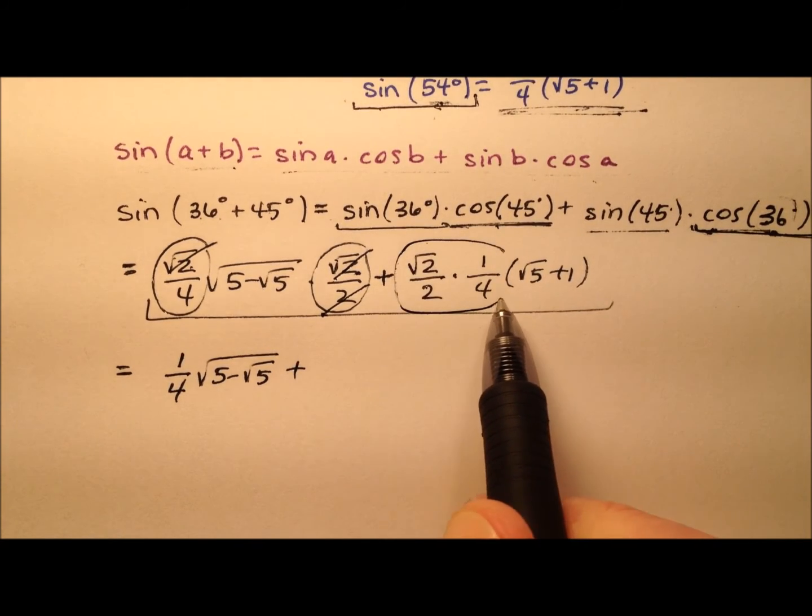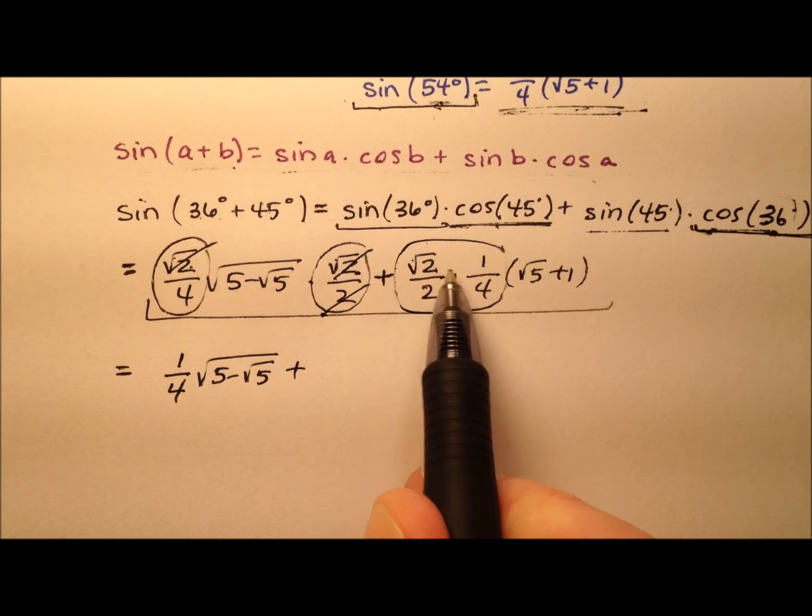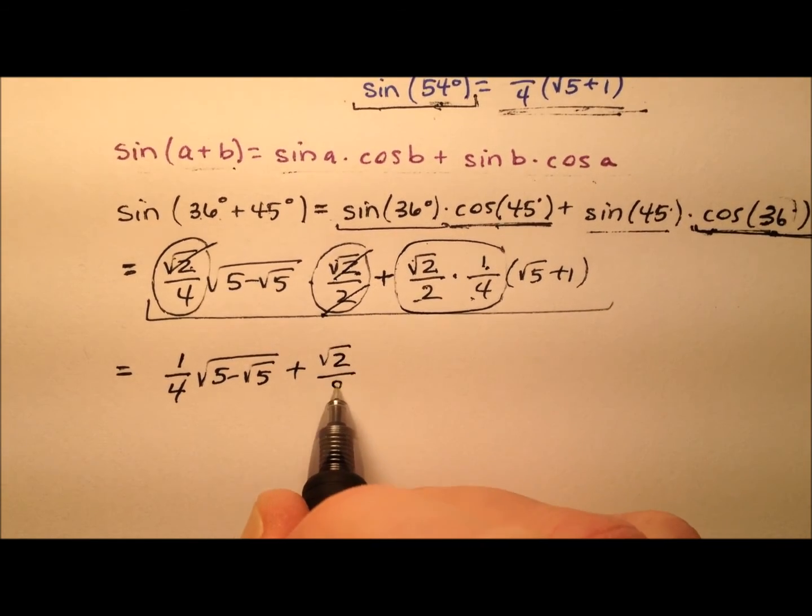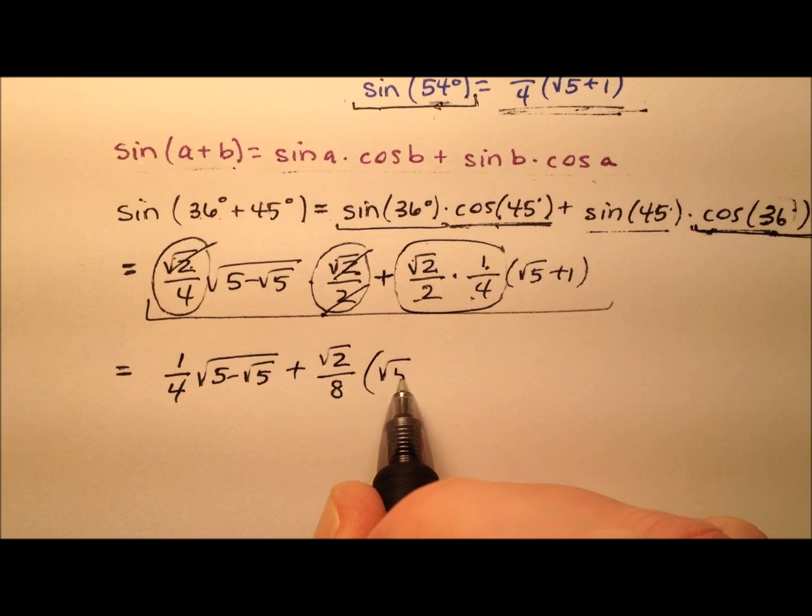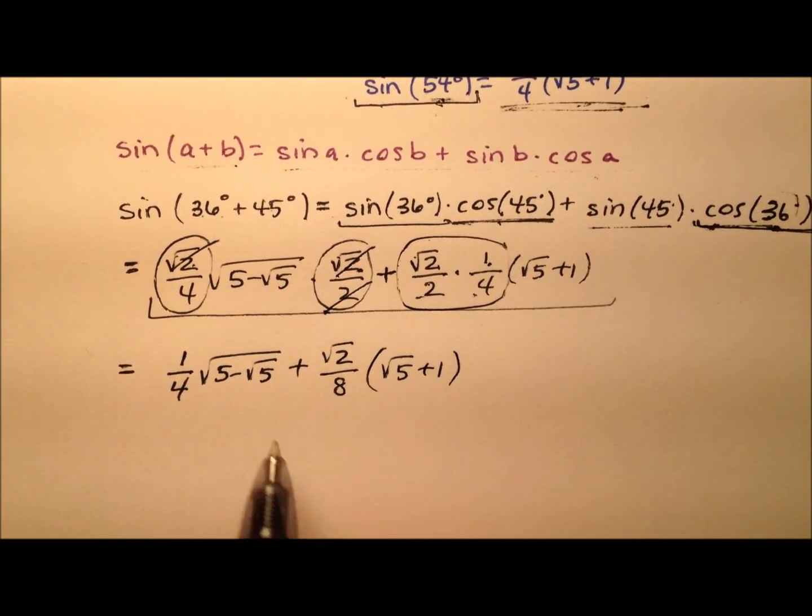It looks like we can multiply these two outright. So, the square root of 2 over 8, and then that's going to be multiplied by that square root of 5 plus 1.